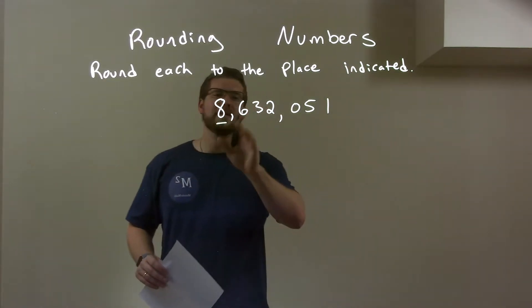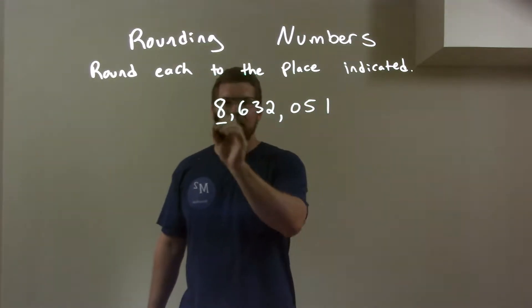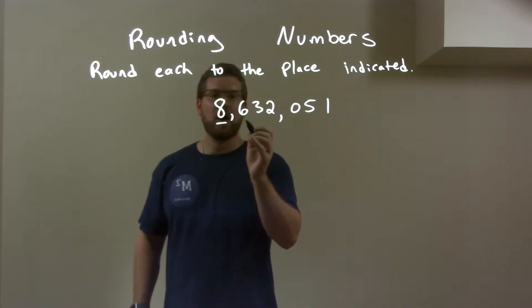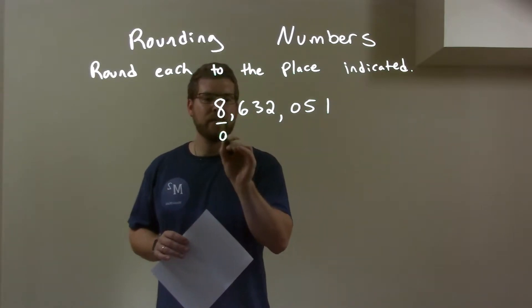So we have our 8,632,051. Well, we're indicating rounding to this place, so I have to look right to the right. That's a 6. That 6 causes this 8 to round up. So we round up that 8 to a 9.